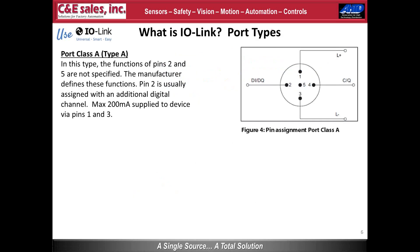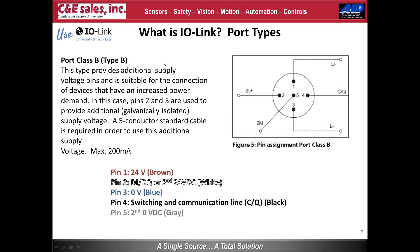There are two port types in IO-Link. Port Class A has power on pins 1 and 3, the IO-Link channel on pin 4, and sometimes an additional digital input on pin 2. Port Class B uses pins 2 and 5 for an additional power supply, typically used for valves and devices requiring extra power.